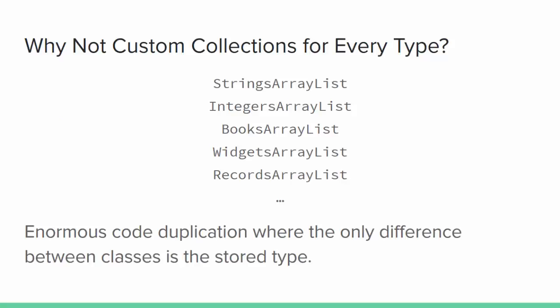You could, of course, write a new version of the ArrayList class for every kind of object you'd ever want to manage in an ArrayList, but that would be an enormous amount of code duplication where the only difference from one ArrayList to the next is the data type being stored.